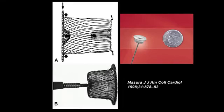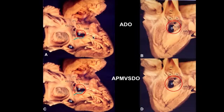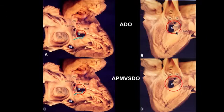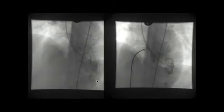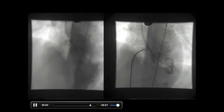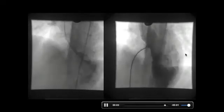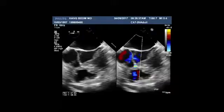So I use the Amplatzer septal occluder instead of the perimembranous PMVSD occluder. If I use the Amplatzer septal occluder, it has no right ventricular disc, so on the right side we don't have to worry about touching the AV bundle. On the left ventricular side, the area of contact with the left bundle branch is much less compared to using the muscular VSD occluder. This is the PMVSD with aneurysm, and I closed it with the Amplatzer septal occluder successfully, and I reported this to a journal.